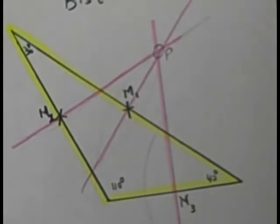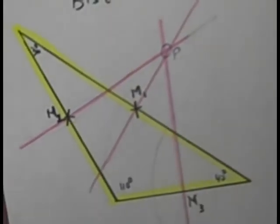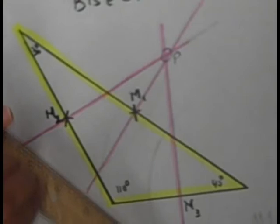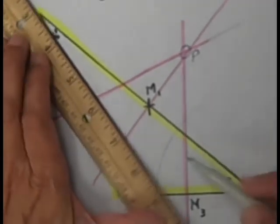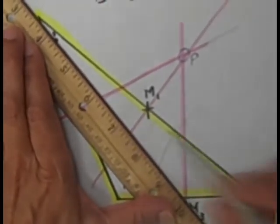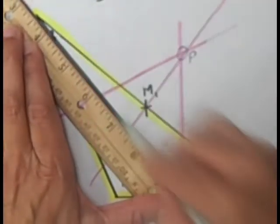A median connects a midpoint to the opposite vertex. So midpoint to opposite vertex. Here we go.